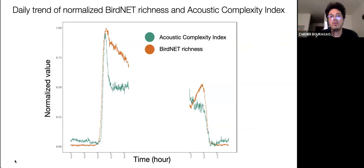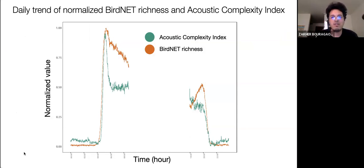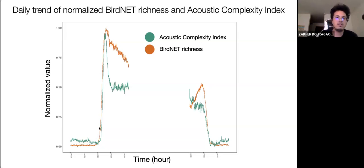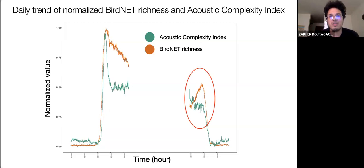My analysis focused on understanding the daily trends of the Acoustic Complexity Index and bird richness inferred from BirdNET, their variation across different months, and their behavior in both burned and intact forest. The daily trends of normalized values for both ACI and bird richness showed a degree of similarity but exhibited significant differences during the dawn chorus and evening periods. Both metrics peaked during the dawn chorus; however, the rise in bird richness began earlier and sustained for a longer duration, in contrast to the ACI peak which was narrower and only lasted about two hours.